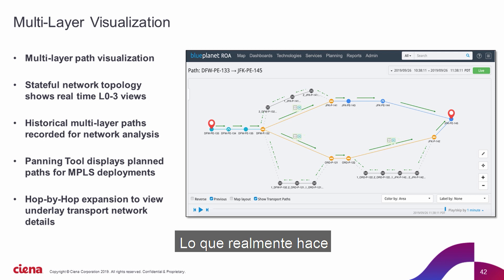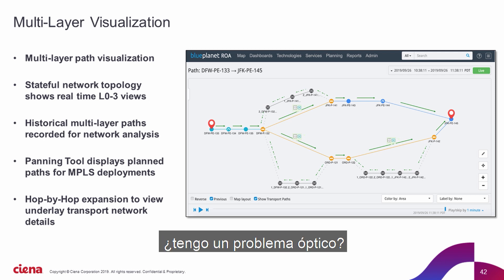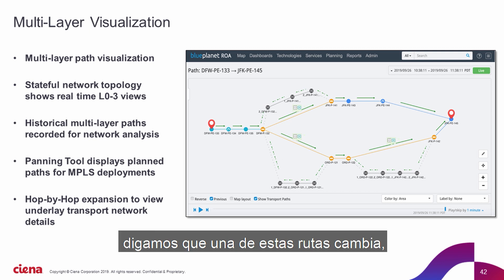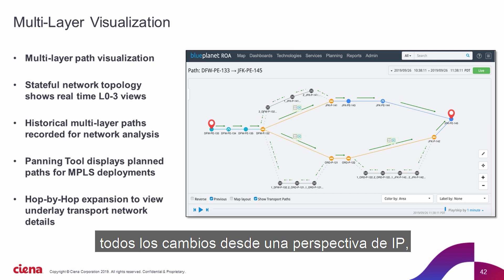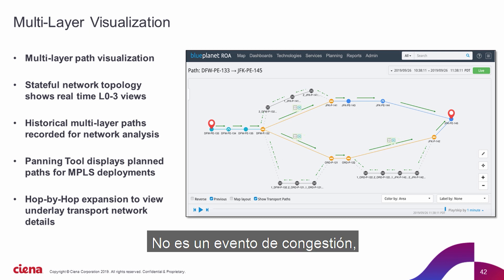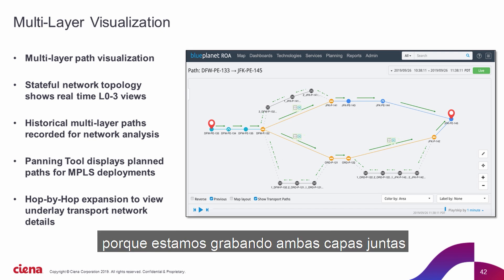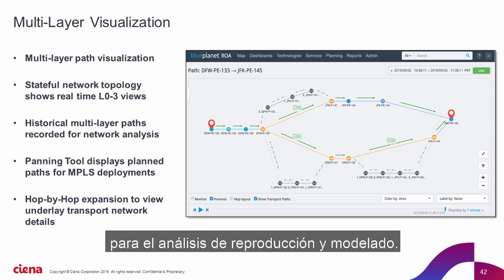What it really does is it can at a glance tell me: do I have an IP problem or do I have an optical problem? Has the optical link wrapped? The other thing — because we're collecting this information millisecond by millisecond — let's say one of these paths changes. If the ring reverses from an optical transport, all that changes from an IP perspective is maybe the latency; it's not a congestion event, but the latency has shot up because it's taking a longer path. We actually reflect that because we're recording both of those layers together and then storing that so we can use it for playback, analysis, and modeling.